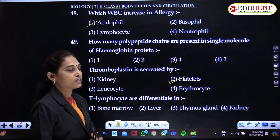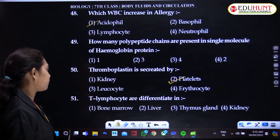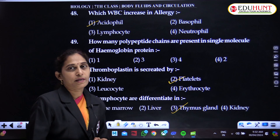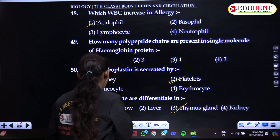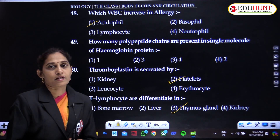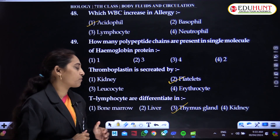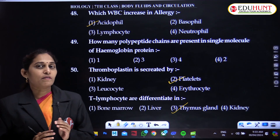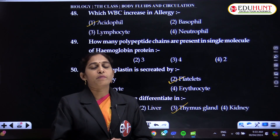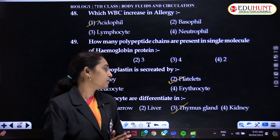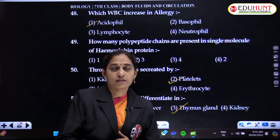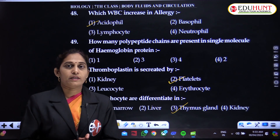T lymphocytes differentiate in the thymus. B lymphocytes differentiate in the bone marrow. Lymphocytes are produced in the bone marrow, but for maturity, B cells mature in the bone marrow while T cells mature in the thymus gland — that is why we name them B and T.